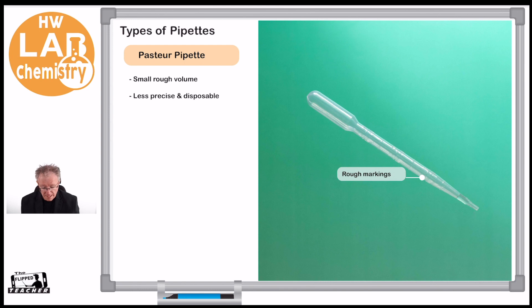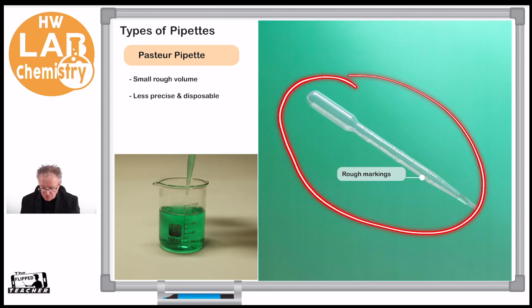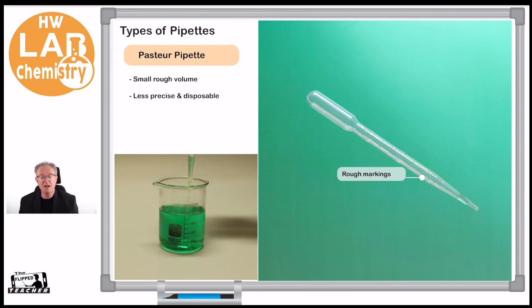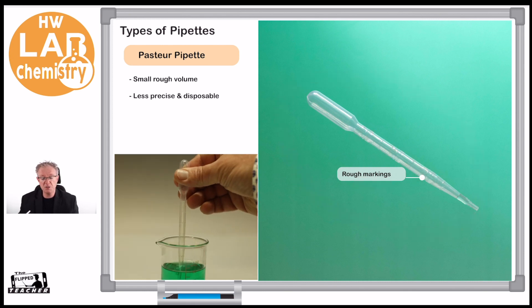And then we have the last type of pipette, which is called a Pasteur pipette. This is for rough measurements—we've got rough markings along here. As you can see in the video, we can just squeeze it, put it into our liquid, let go, and it just sucks up. It's for moving small amounts of liquid from one place to another and adding things dropwise to experiments, for example.